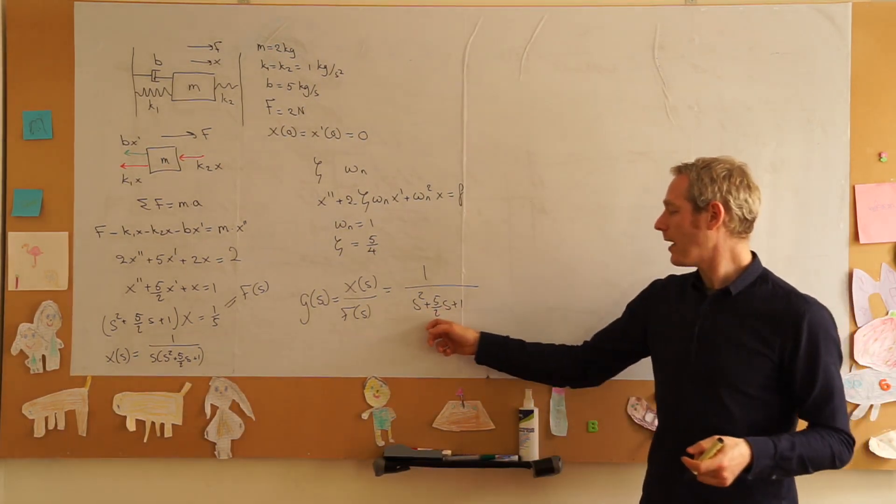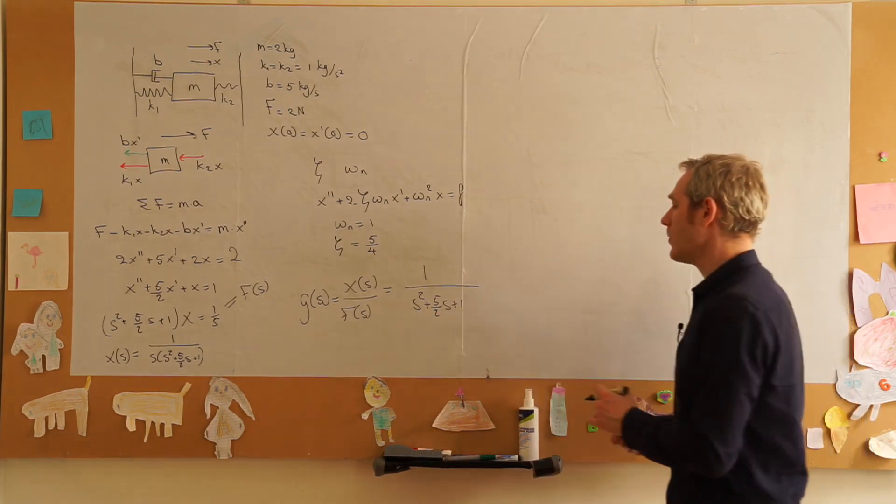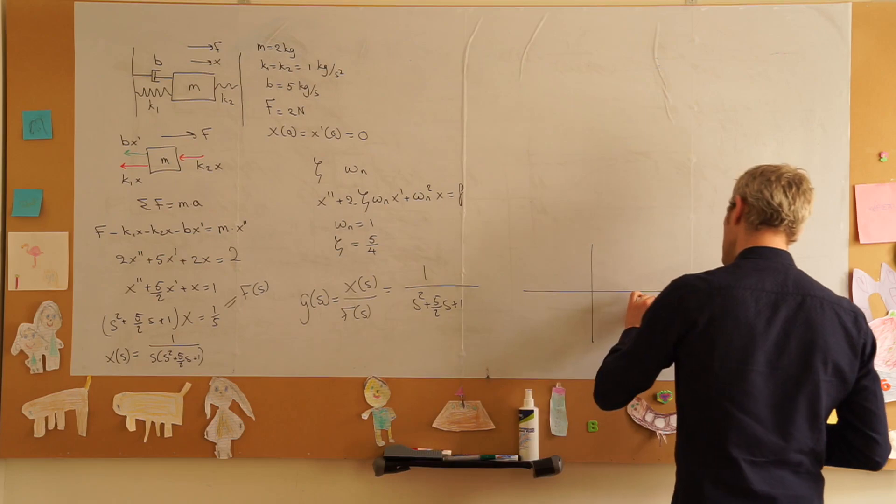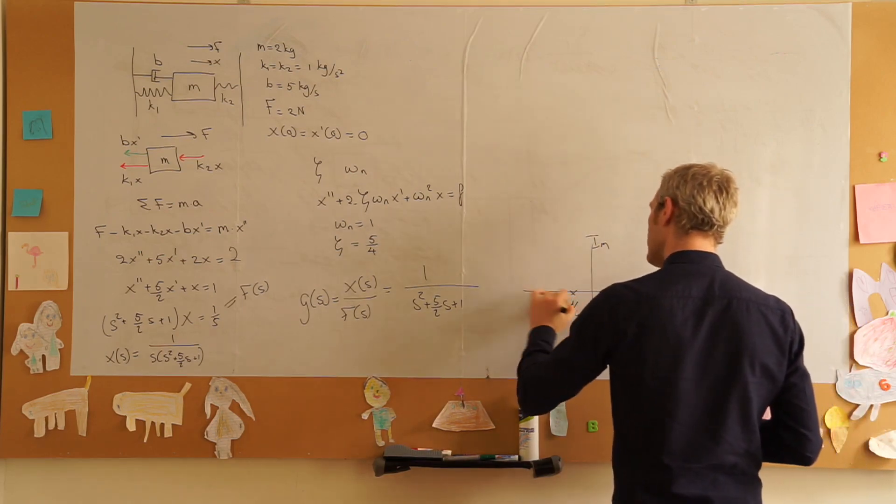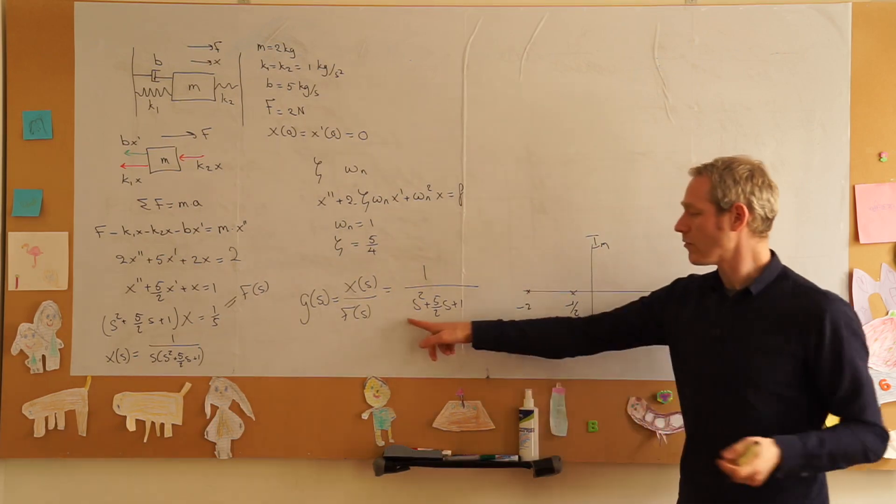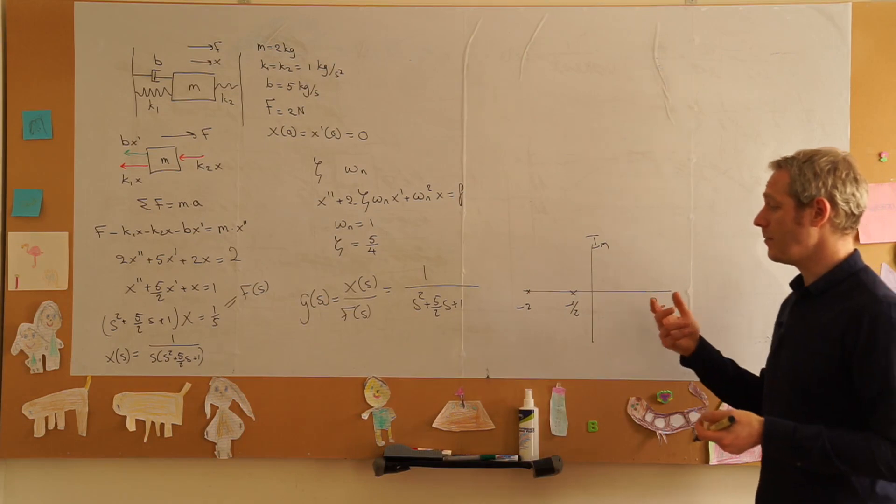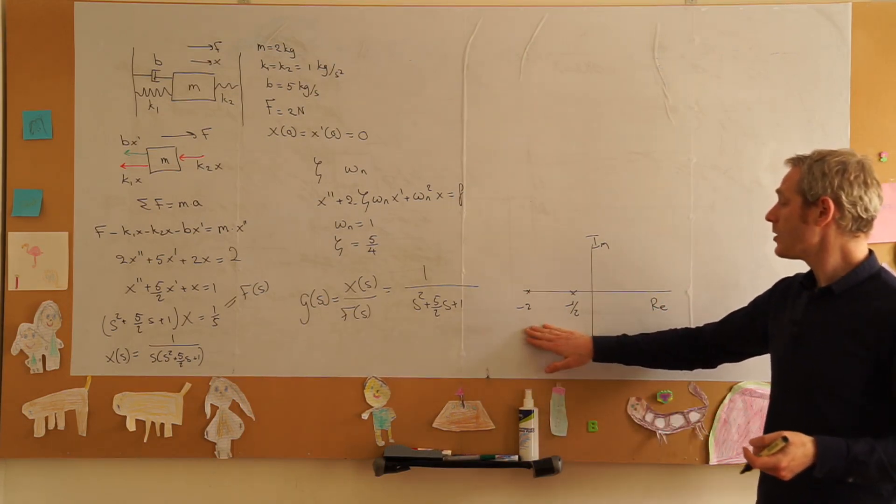The stability of our system is determined by the two poles of this transfer function which happen to lie both on the negative real axis at minus a half and minus two.